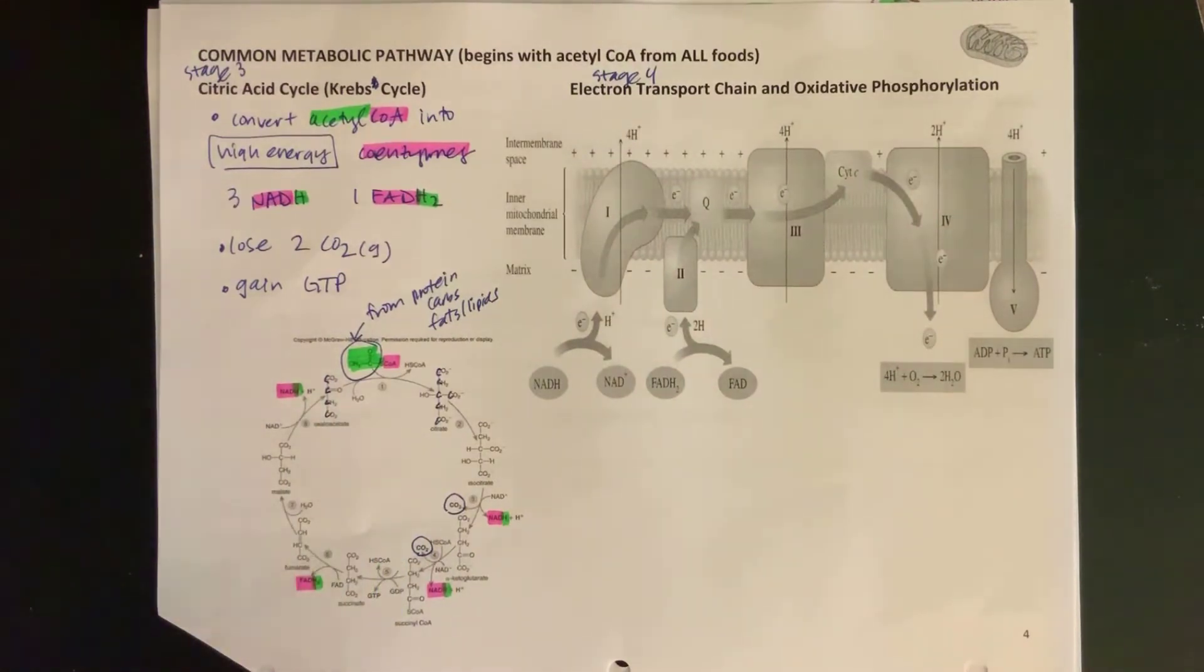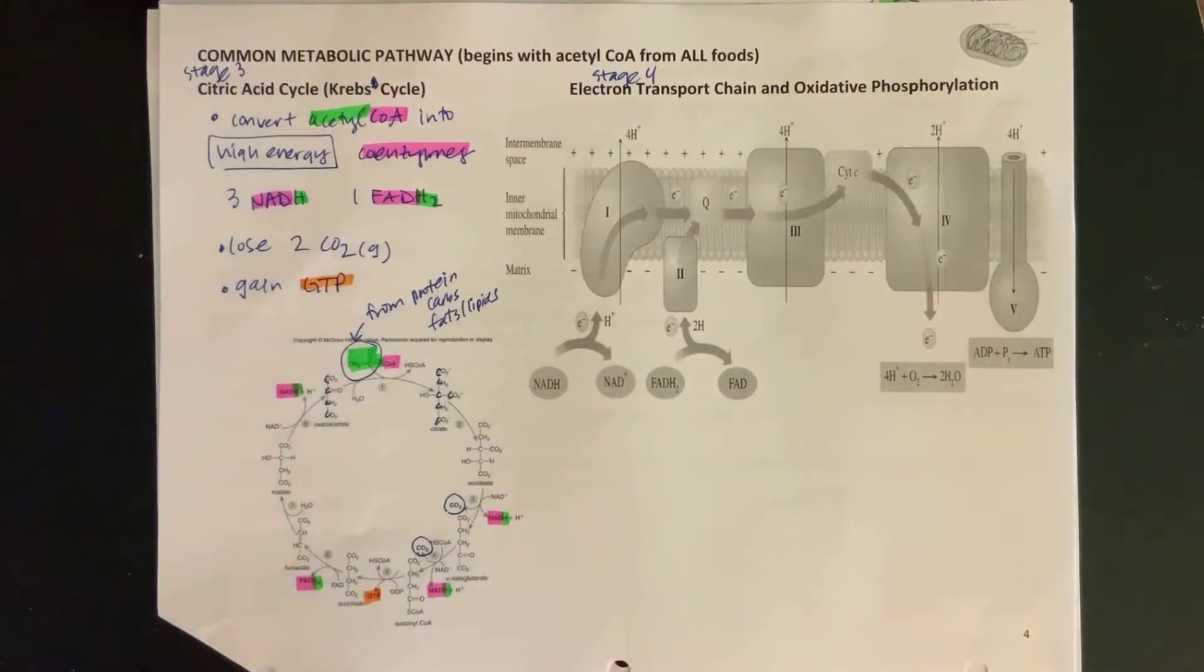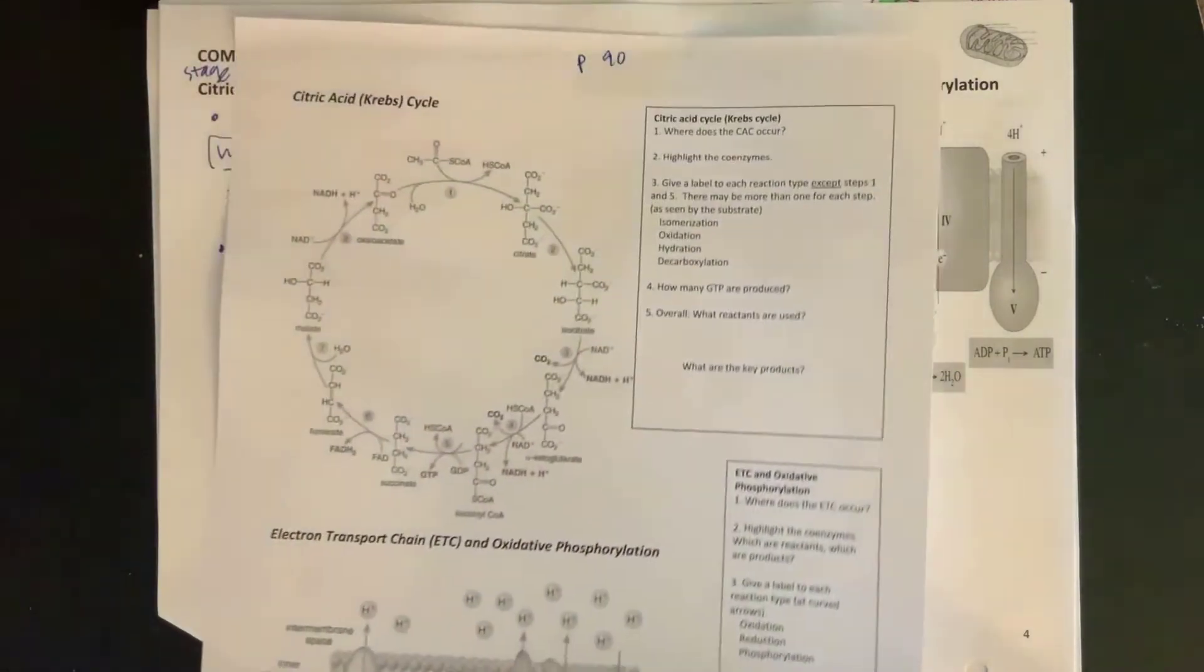So that is the citric acid cycle at a quick glance. The one other thing that we get out of this is the GTP, which is a close cousin of ATP, and there's where that GTP is coming out.